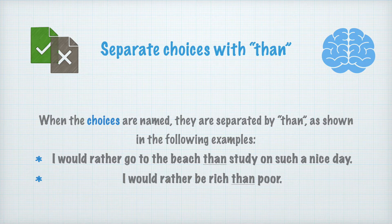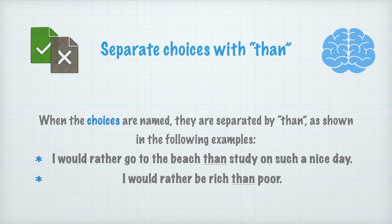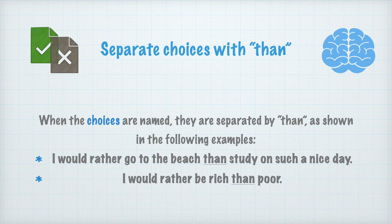When choices are named, they are separated by 'than,' as shown in the following examples. Cuando las opciones se mencionan, se separan por 'than,' como se muestra en los siguientes ejemplos. I would rather go to the beach than study on such a nice day. Preferiría ir a la playa que estudiar en un día tan bonito. I would rather be rich than poor. Preferiría ser rico que pobre. Please note how 'than' is translated as 'que' in Spanish. Por favor, toma nota como 'than' se traduce como 'que' en español.